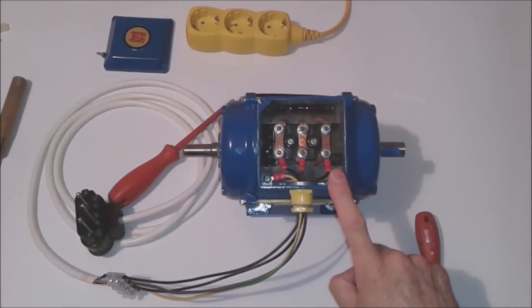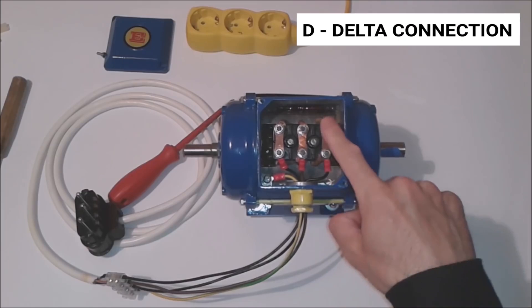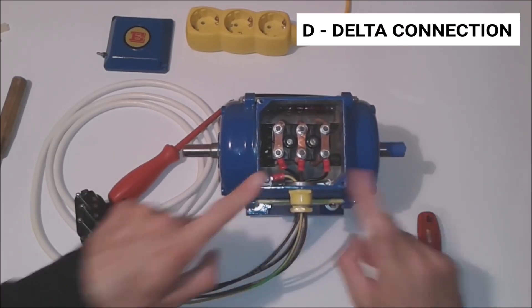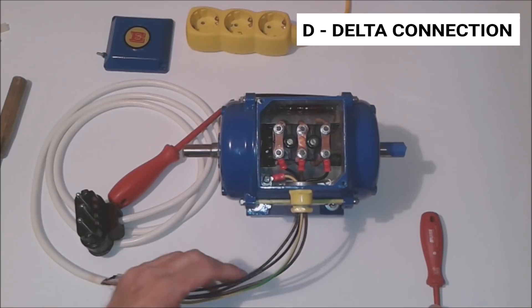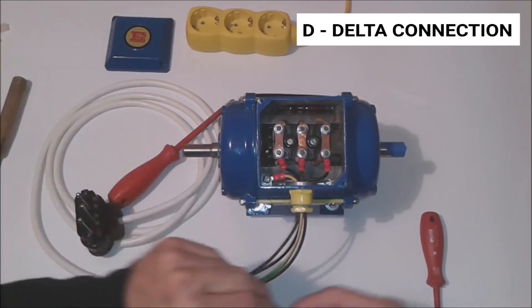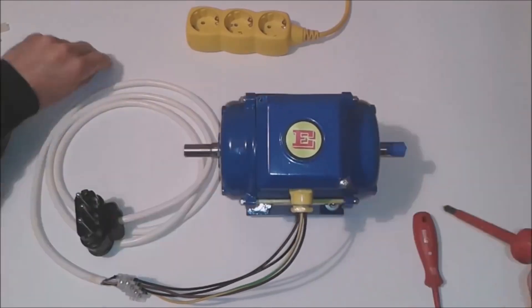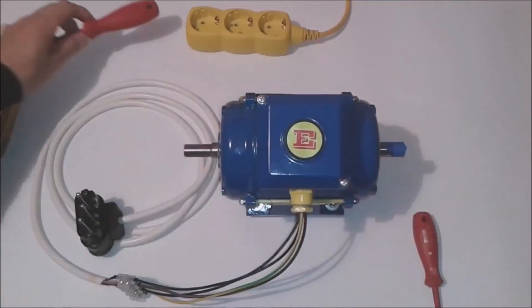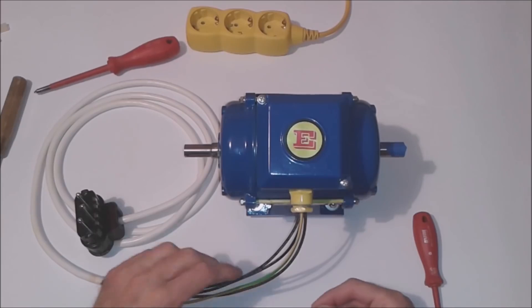Now the coils of our three-phase electric motor are connected into a delta connection. This is what we need so we can connect the three-phase electric motor to a single-phase power supply.